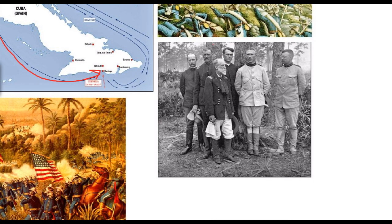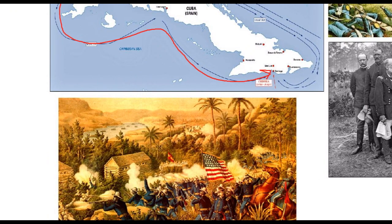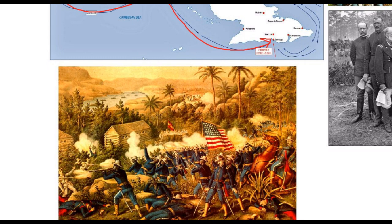It was a tight battle, but thanks to the efforts of several organizations, including Theodore Roosevelt's Rough Riders, and critically the African-American soldiers of the 9th and 10th U.S. Cavalry and 24th and 25th U.S. Infantry Regiments — who did the bulk of the fighting and suffered the bulk of the casualties — American forces achieved victory. Roosevelt and his Rough Riders became famous, while the African-American troops were largely forgotten.